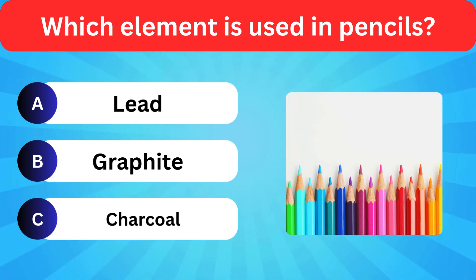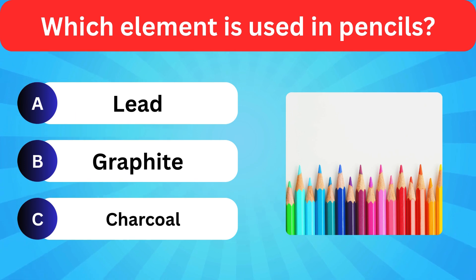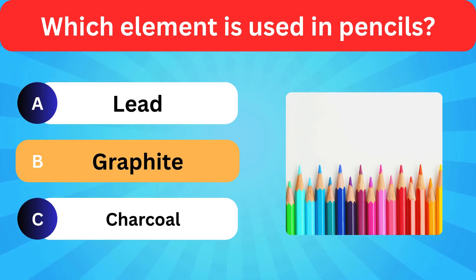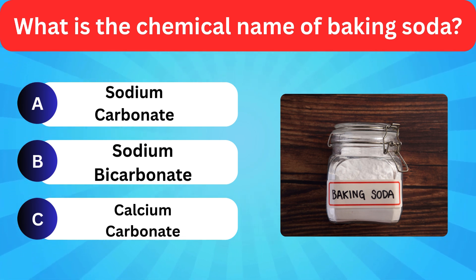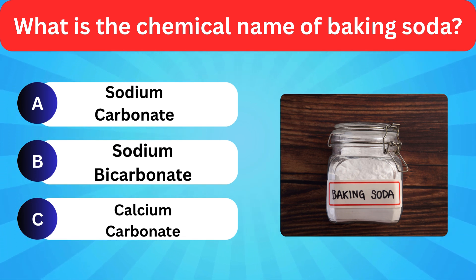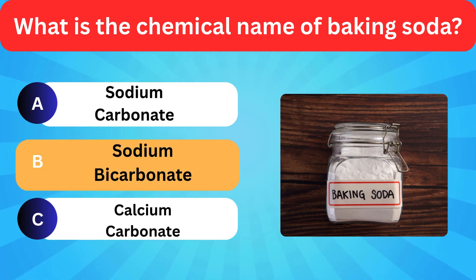What is the chemical name of baking soda? Options: Sodium carbonate, Sodium bicarbonate, Calcium carbonate. Correct answer is sodium bicarbonate.